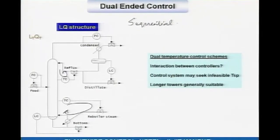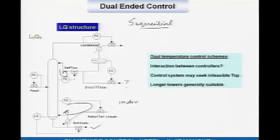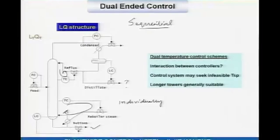Individually tuning is not recommended here. If you tune both loops individually with the other loop off and then take detuning, temperature control here will not be as tight as with sequential tuning. Because the temperature control is not as tight, product purity quality variation would be more, meaning you will have to operate on average at a larger product quality giveaway. So in this particular processing situation the way you tune the loops also becomes important because of interaction.